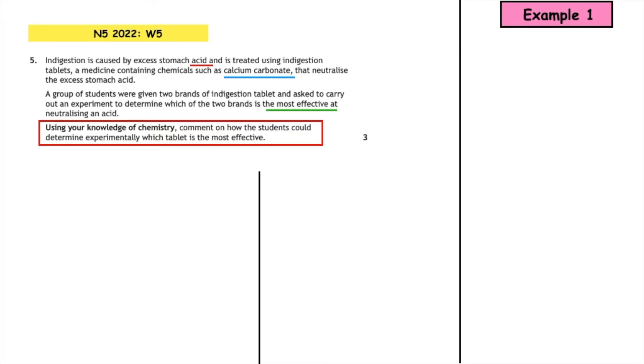Indigestion is caused by excess stomach acid and is treated using indigestion tablets, a medicine containing chemicals such as calcium carbonate that neutralize the excess stomach acid. A group of students were given two brands of indigestion tablet and asked to carry out an experiment to determine which of the two brands is the most effective at neutralizing the acid. Using your knowledge of chemistry, comment on how the students could determine experimentally which tablet is the most effective. So this is the first example of you using our definition, diagram, and detail process.